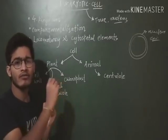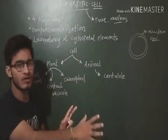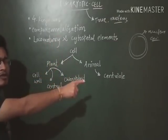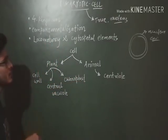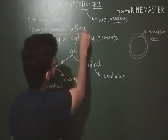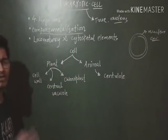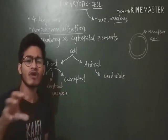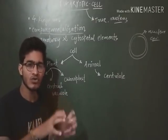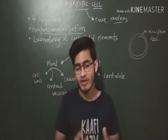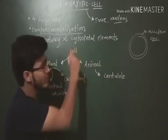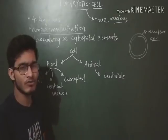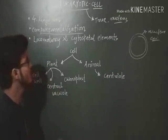All important membrane-bound organelles are also absent in prokaryotes. But in eukaryotic cells, the nuclear envelope is present, the nucleus is well developed, and compartmentalization of the cytoplasm is already there. Compartmentalization means there are different compartments performing different functions — essentially, membrane-bound organelles are present in eukaryotic cells.